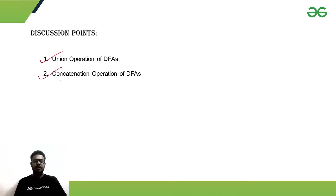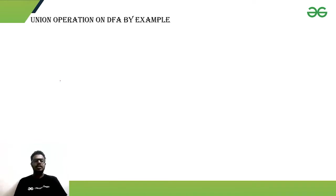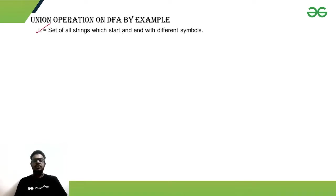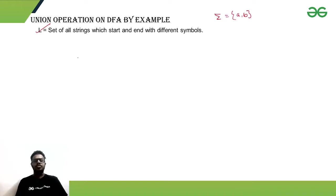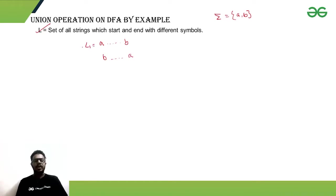Let's start with the union operation. We have a language L which is a set of all strings that start and end with different symbols. In our alphabet we have only two symbols, A and B. So one kind of string can start with A and end with B, and another kind can start with B and end with A.